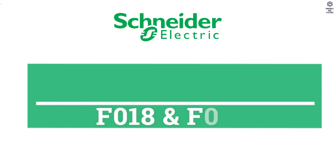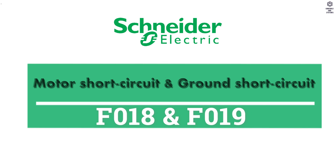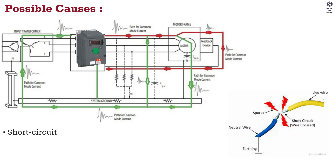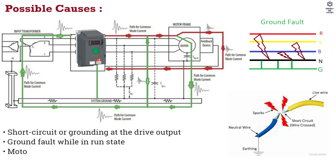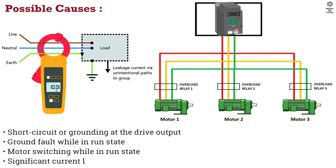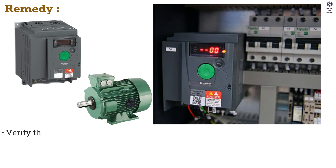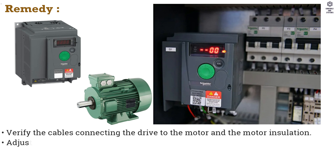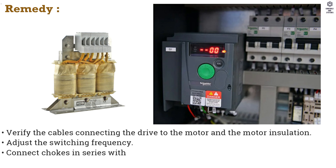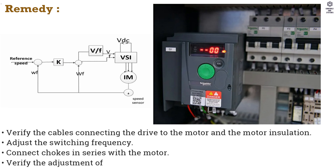F018 Motor Short Circuit and F019 Ground Short Circuit. Possible Causes: Short Circuit or Grounding at the Drive Output. Ground Fault While in Run State. Motor Switching While in Run State. Significant Current Leakage to Ground While Several Motors are Connected in Parallel. Remedy: Verify the Cables Connecting the Drive to the Motor and the Motor Insulation. Adjust the Switching Frequency. Connect Chokes in Series with the Motor. Verify the Adjustment of Speed Loop.